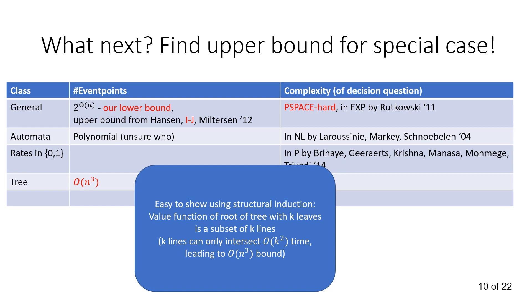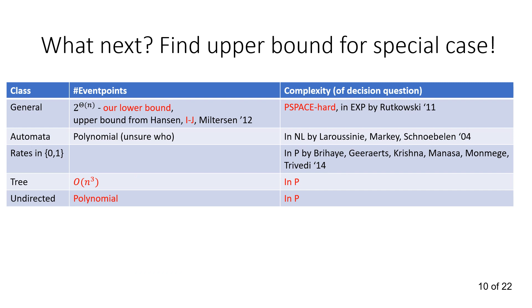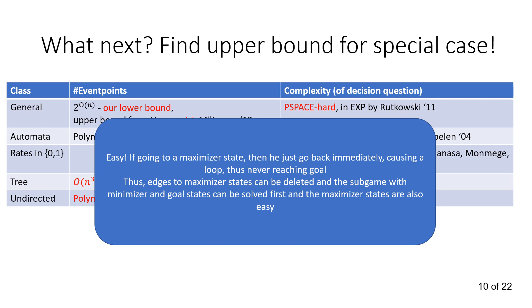We have the tree case. We managed to show in this paper that it's at most n to the third by showing the following lemma: The value function of the root of a tree with k leaves is a subset of k lines. This is not the same thing as there being at most k many line pieces, but it means there's at most k-squared many line pieces because that's the number of intersections of k lines, leading to an n to the third upper bound. Finally, we managed to show that undirected graphs are polynomial in event points, and therefore NP, by showing that if you go to a maximizer state, then you can just go back immediately and therefore loop, and therefore never reach goal, and therefore we can just erase all edges leading to maximizer states.